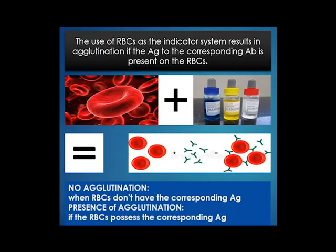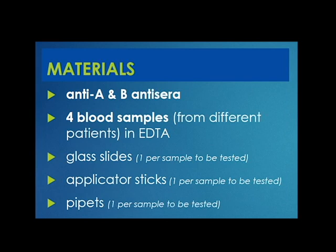When red cells are mixed with various reagent antisera containing soluble antibodies, agglutination will occur on the slides containing cells possessing the corresponding antigen. The use of RBCs as the indicator system results in agglutination if the antigen corresponding to the antibody is present on the red cells.